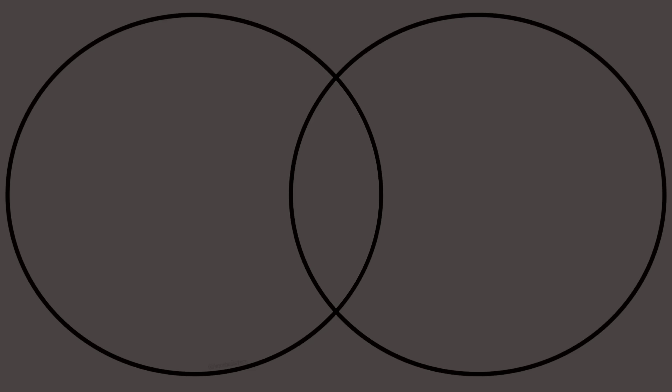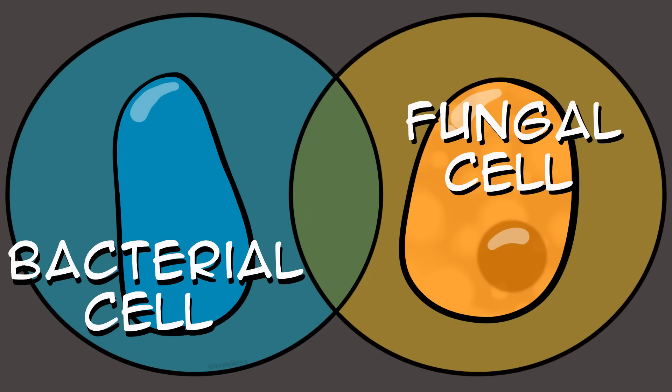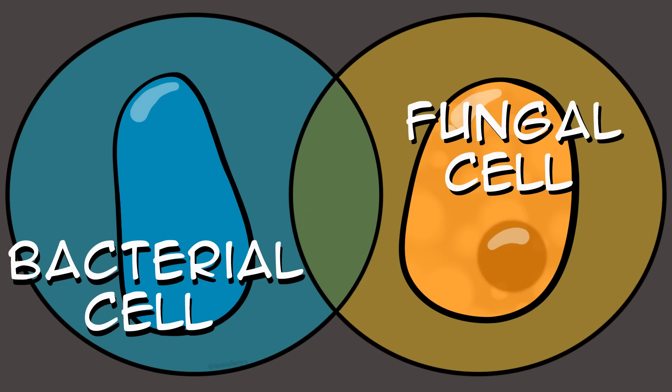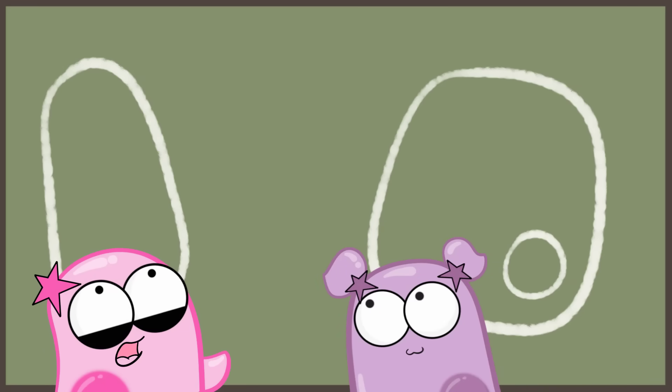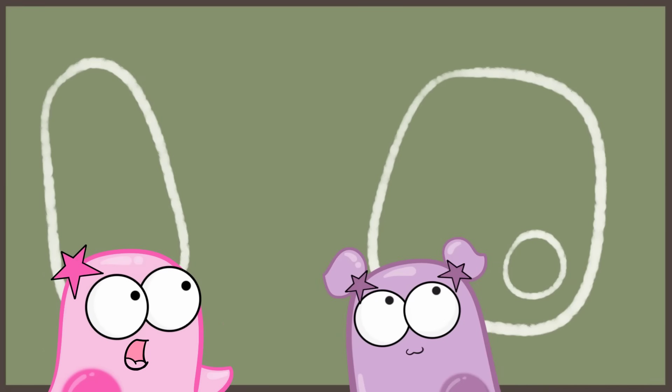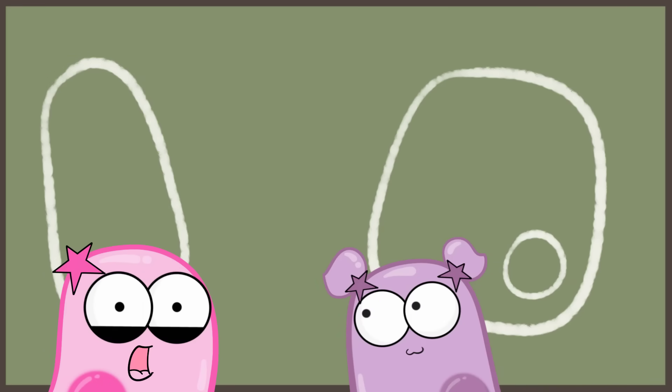It turns out bacterial cells and fungal cells are very different cell types. In fact, fungal cells have more in common with your cells, which are animal cells, than they have in common with bacterial cells. And that has a lot to do with the comparison of prokaryotic cells with eukaryotic cells, which is what we will focus on.